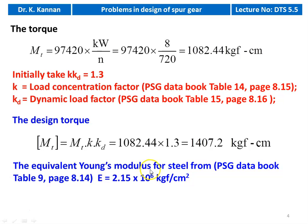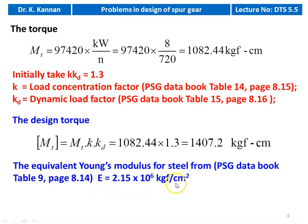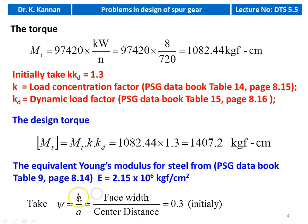Equivalent Young's modulus for steel from the PSG Data Book, table number 9, page 8.14: E equals 2.15 × 10⁶ kgf/cm². Here both materials are steel. Then we take the psi value, which is B/A — face width divided by center distance.